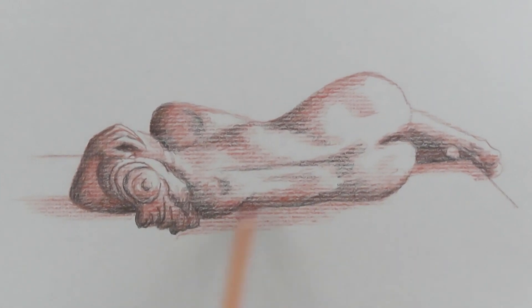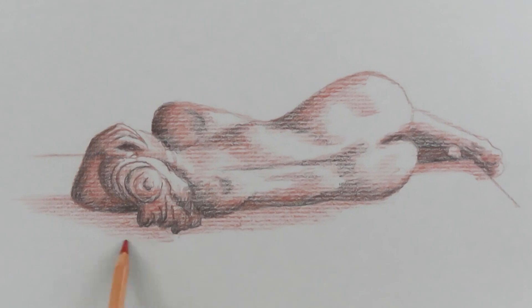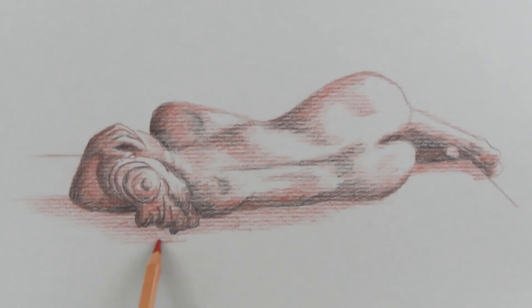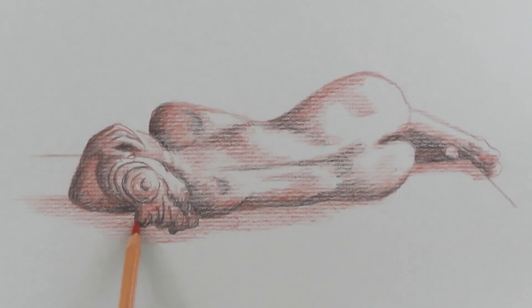This gives us some more contrast in between the, less contrast actually, from going from this dark to the gray. We have this intermediate value of the red chalk in there. So I'm just going to go ahead and add in some shadow area.